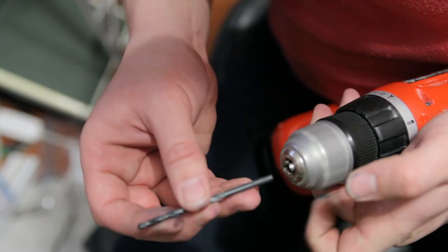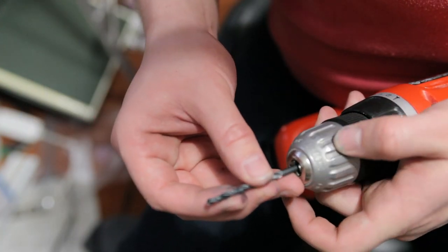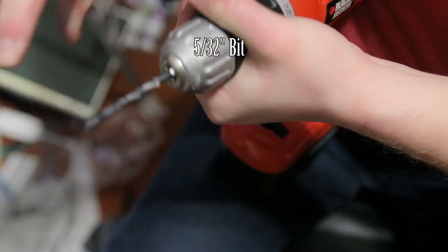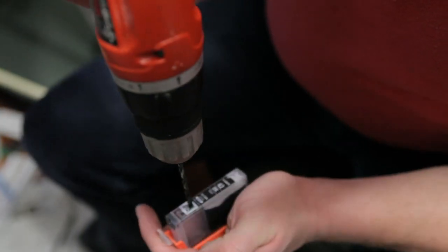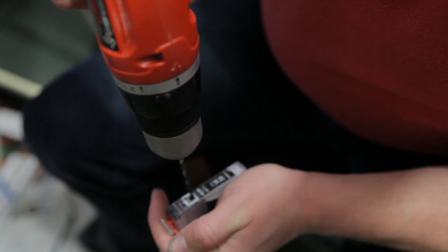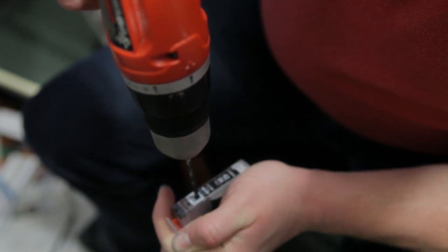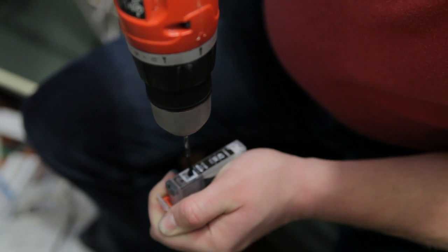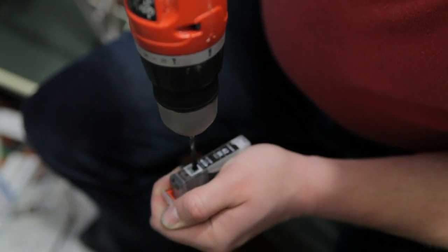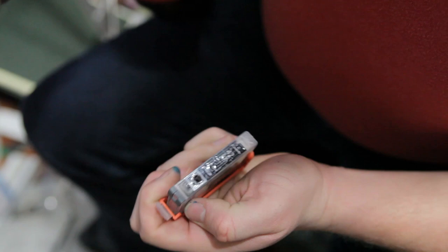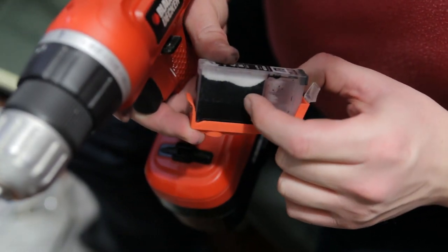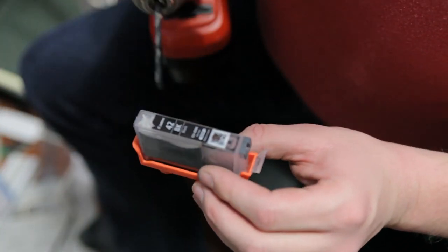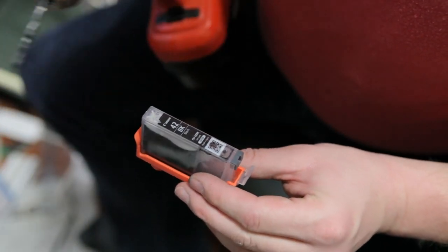Alright, at this point I'll switch to a 5/32 bit and just drill that hole out a little more. You don't have to worry about shavings falling into there because they won't make it through, they won't cause a problem, so just use a sharp bit, but it'll be fine.